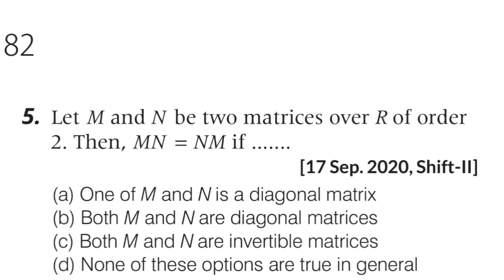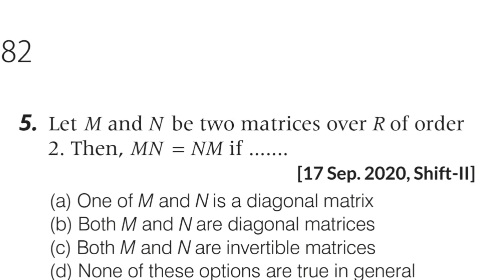There are four options. When does MN equal NM? One: M or N must be diagonal matrices. Two: both must be diagonal matrices. Three: both must be invertible. Four: none of these options are true in general. None of these options are true in general.